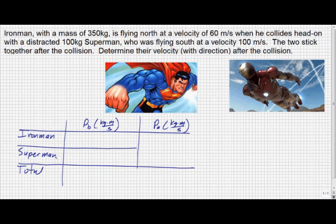Now as we start the problem, Iron Man has a mass of 350 kilograms flying north at 60 meters per second. We'll call North positive, so his momentum before the collision is 350 kilograms times 60 meters per second, or 21,000 kilogram meters per second.